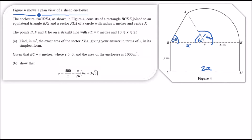The sector has 120 degrees, so the exact area of the sector is simply a fraction of a full circle: 120/360 times π r², where the radius is x. So that's π x² over 3. That's part (a) done.